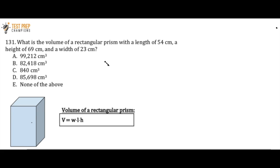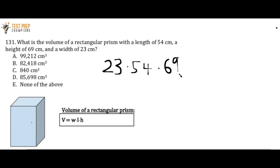For this question, all we have to do is use this formula. So I'm going to do the width, which we know is 23, times the length, which is 54, times the height, which is 69. The order that you multiply these doesn't matter. You just want to multiply width, length, and height, and if you plug that into your calculator you're going to get answer D, which is the correct answer.